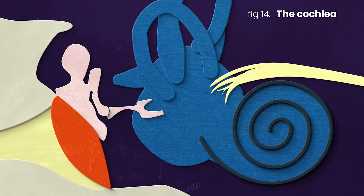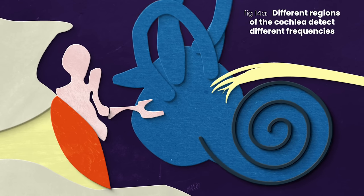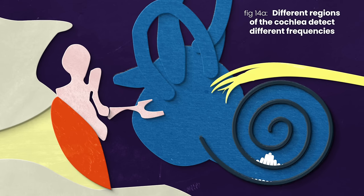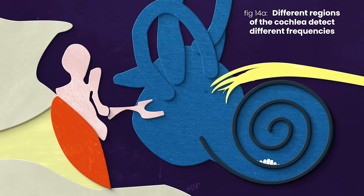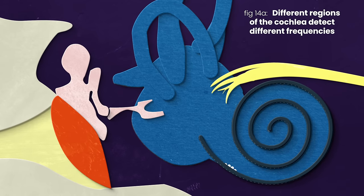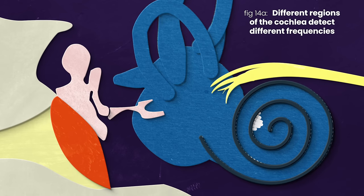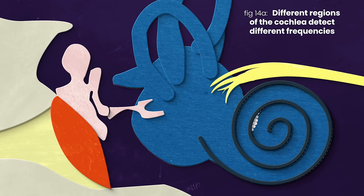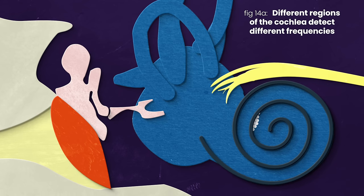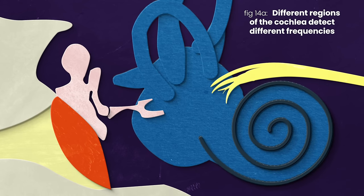Different regions of the cochlea get stimulated by different frequencies. Our A4 that I showed you earlier hits closer to the middle of our cochlea, while our higher A hits more toward the front of the cochlea. Low A is pretty deep in the spiral here. Each little horizontal slice of the cochlea corresponds to different frequencies. It's these different frequencies that allow us to understand and identify a huge range of different sounds.